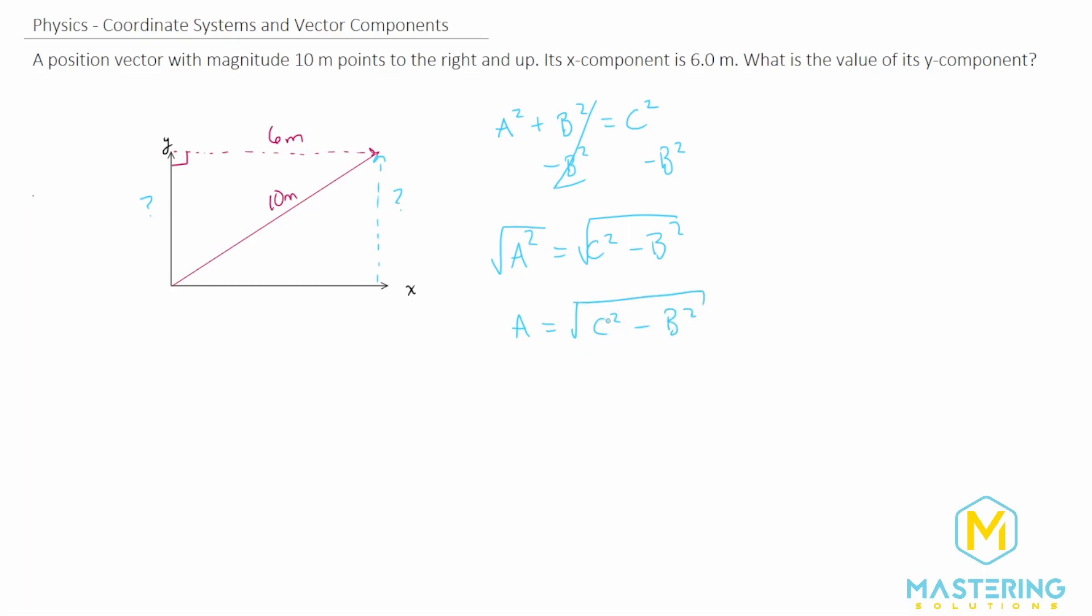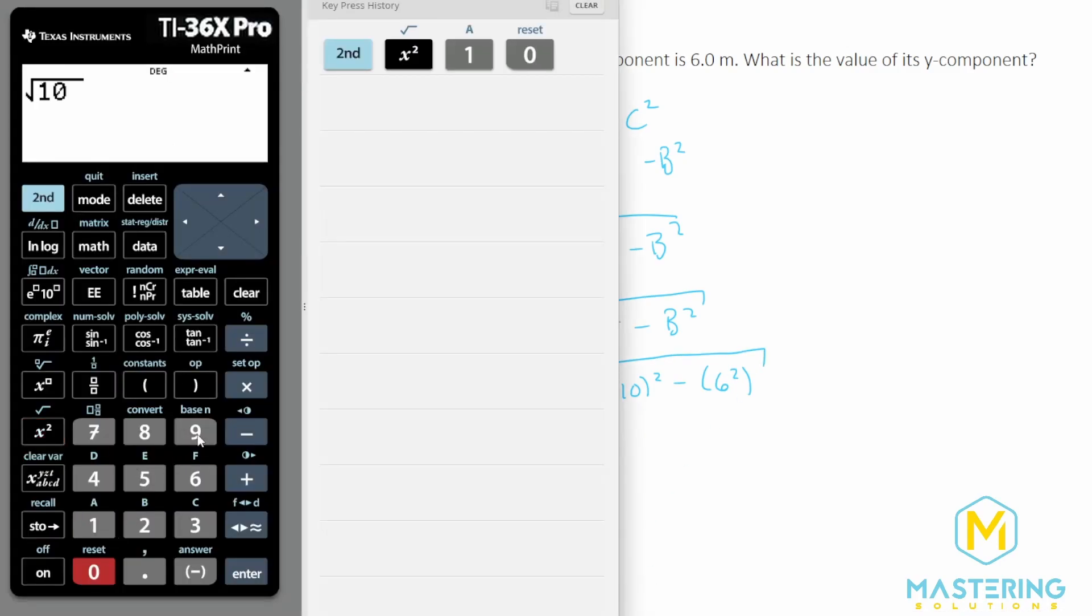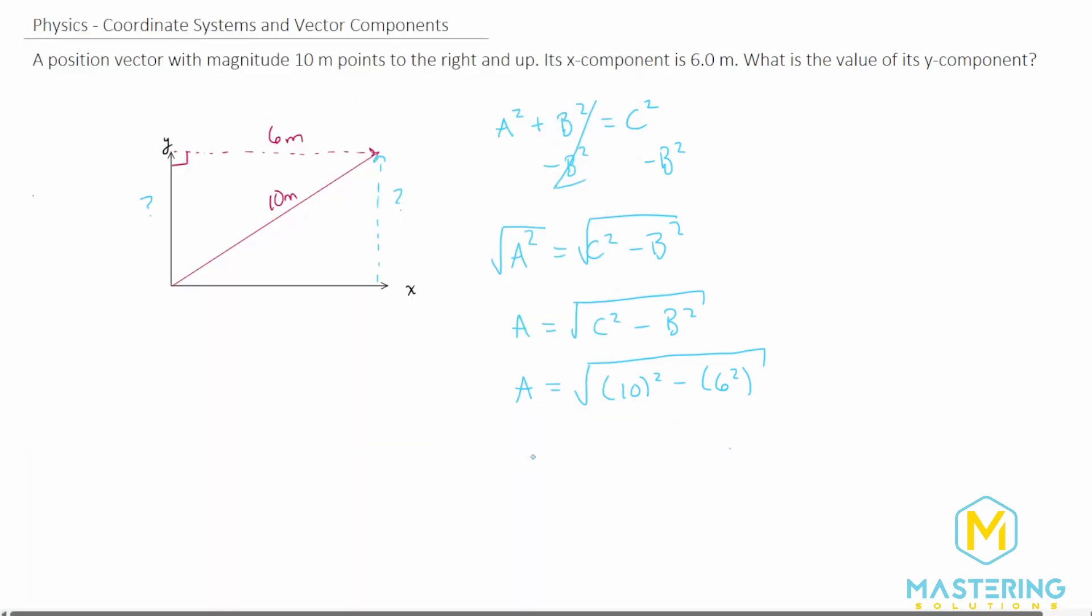We have the value for c which is 10. So a is equal to the square root of 10 squared minus b which we said is 6. So 6 squared and we'll take the square root of all that. So we have the square root of 10 squared minus the square root of 6 squared and that is 8. So a or the y component of this vector is 8 meters.